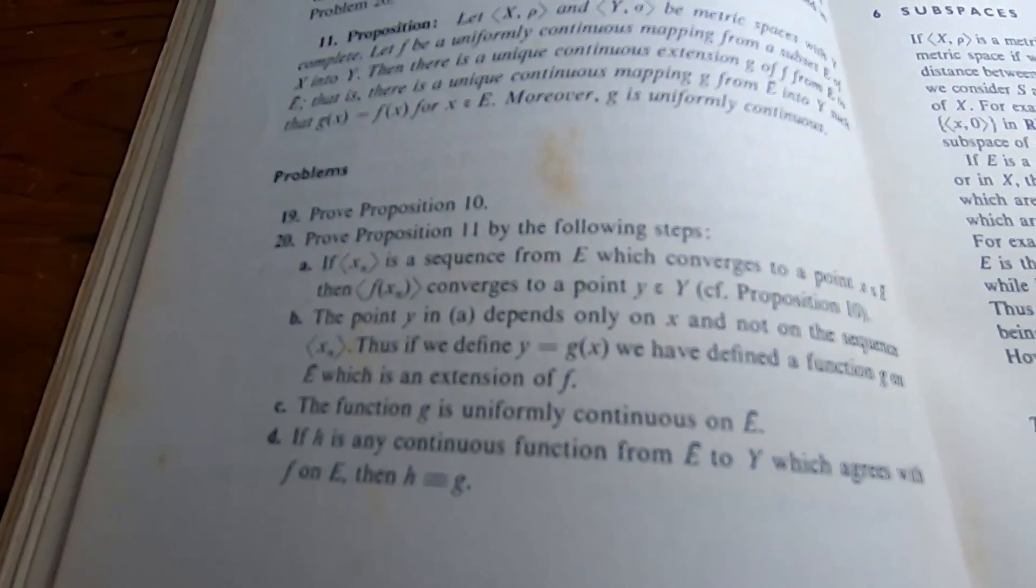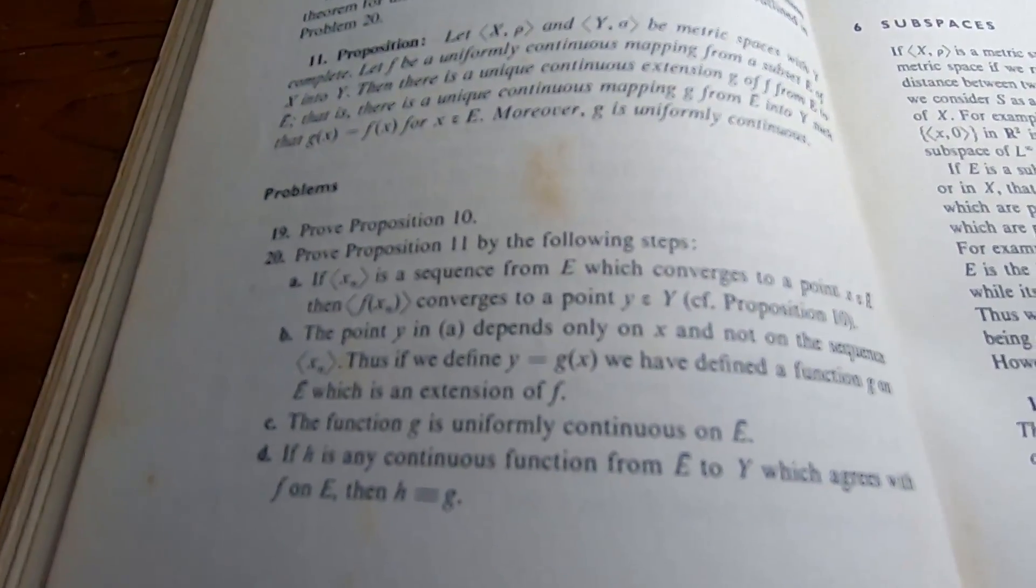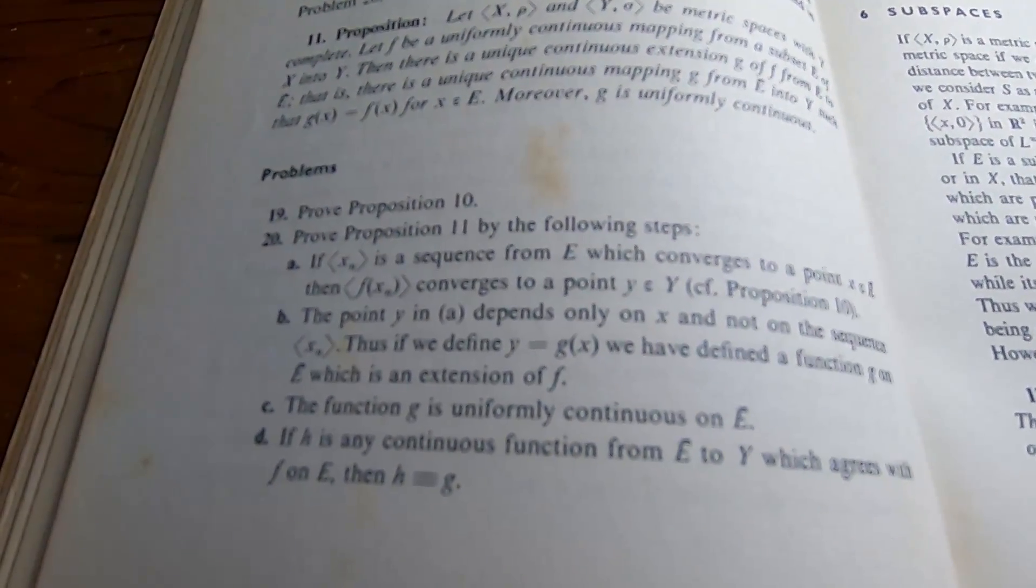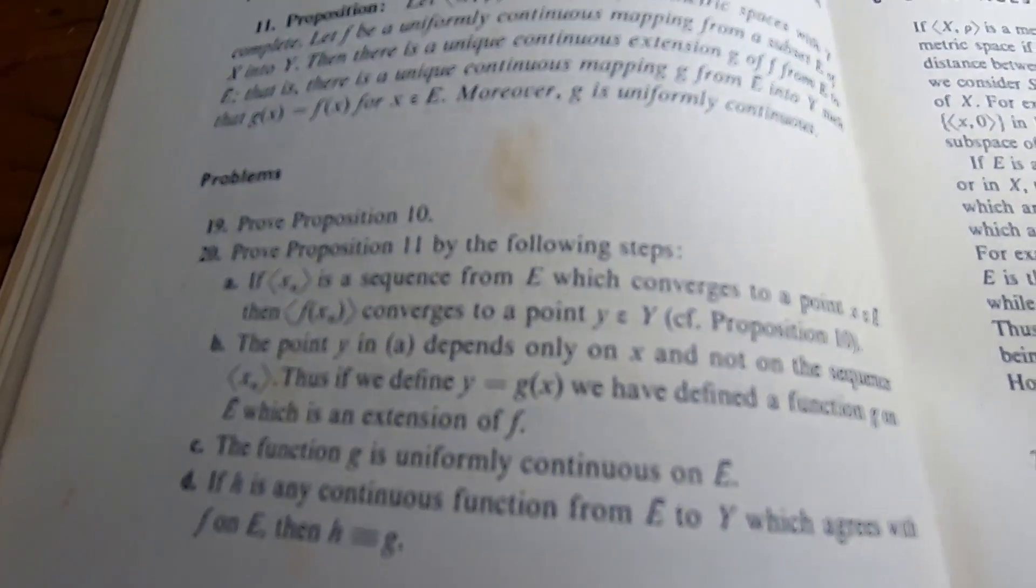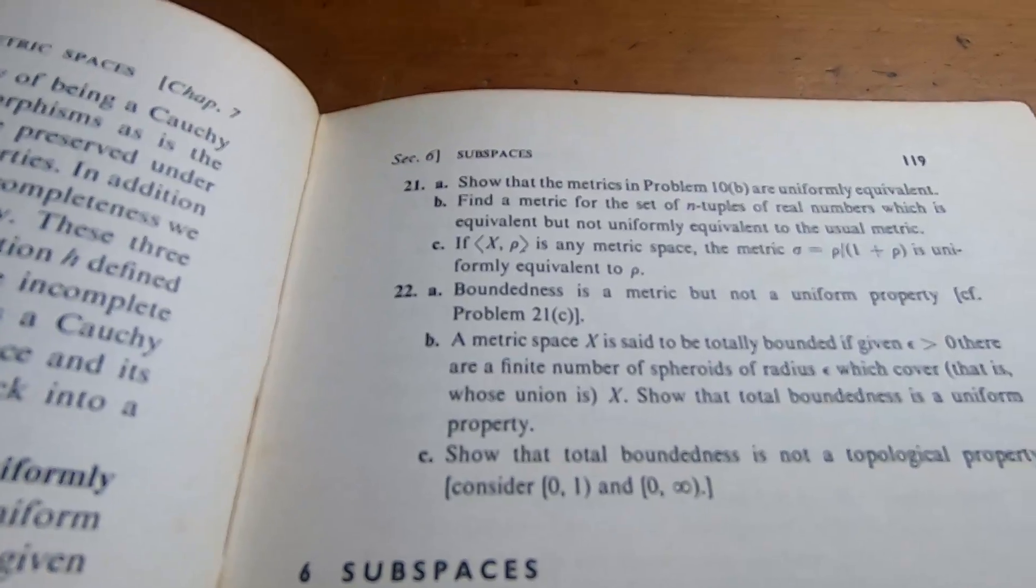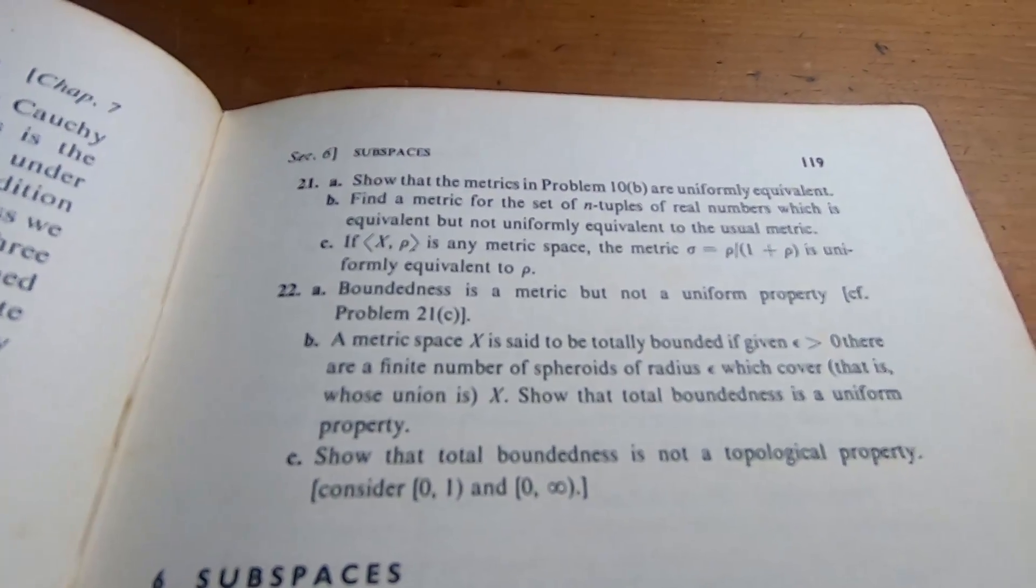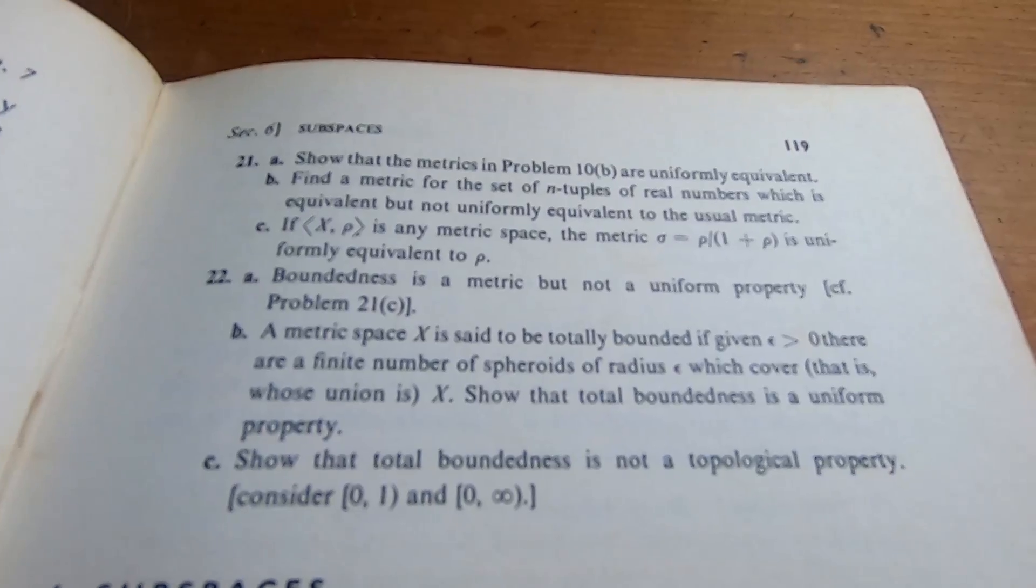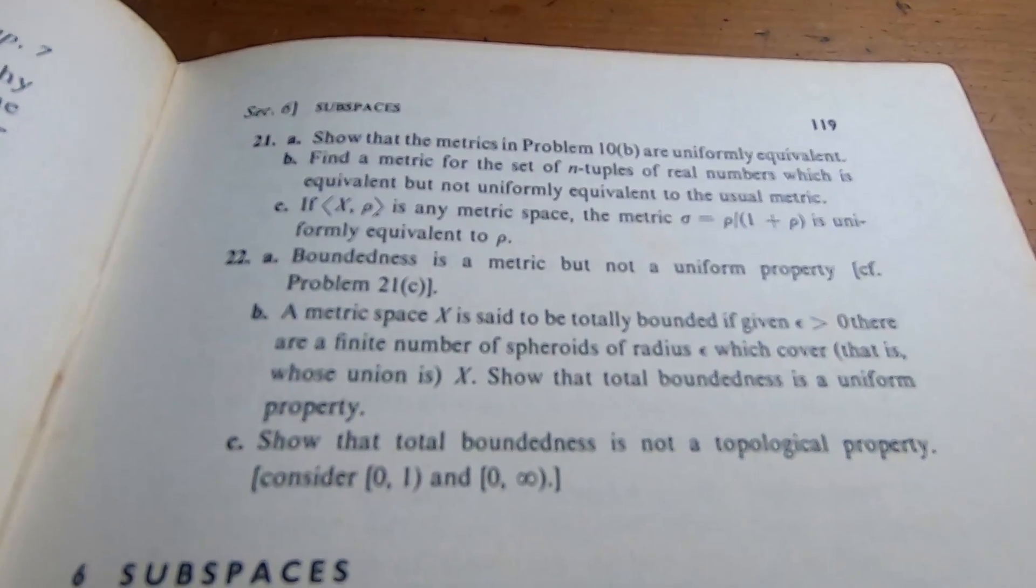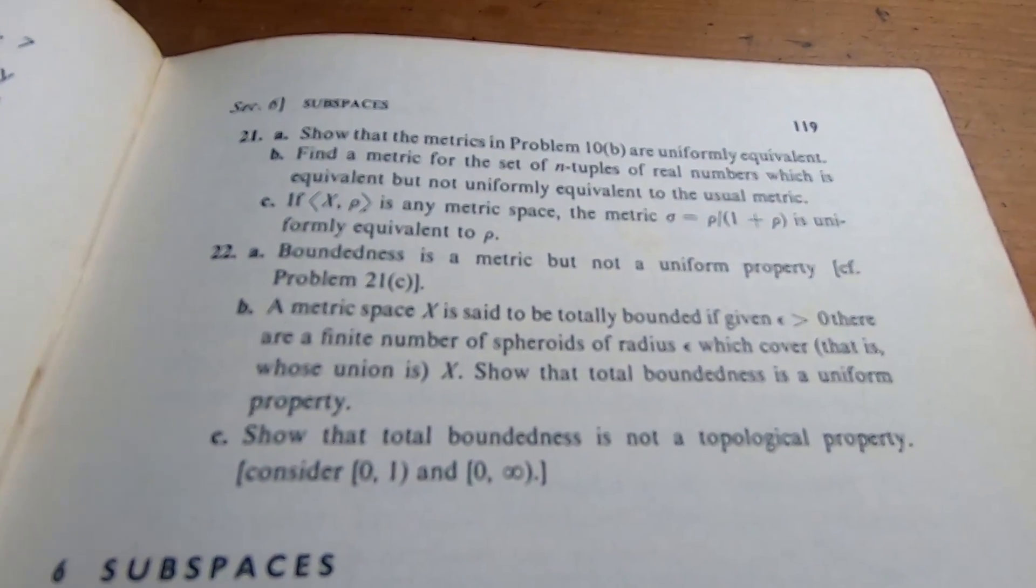One of the downsides of this book, and this is not something that is unique to Royden, that's very common in all real analysis books, or in most at least, is that there are no solutions to the exercises. That is quite unfortunate. So you're stuck trying to do it on your own, which is okay. I mean, at this level, in theory, you should be able to do it on your own. And if you can't, you just have to keep trying.